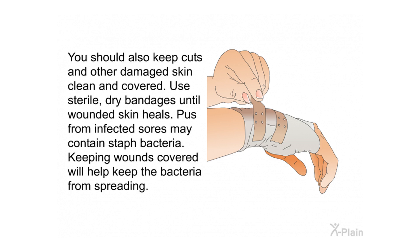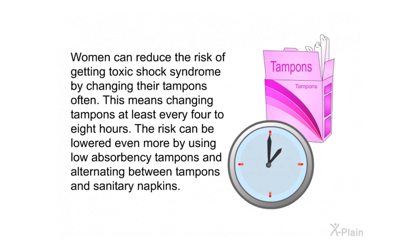You should also keep cuts and other damaged skin clean and covered, using sterile dry bandages until the wounded skin heals. Pus from infected sores may contain staph bacteria, so keeping wounds covered will help prevent the bacteria from spreading. Women can reduce the risk of toxic shock syndrome by changing tampons at least every four to eight hours, using low-absorbency tampons, and alternating between tampons and sanitary napkins.